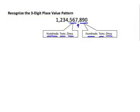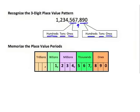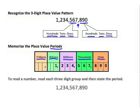This is important to be able to recognize or read the value of a number in our place value system. To identify or read a number, you're going to have to memorize the place value periods. Starting from the right, we have the ones period, followed by the thousands period, then millions, then billions, and then trillions. To read a number, read each three-digit group and then state the period.